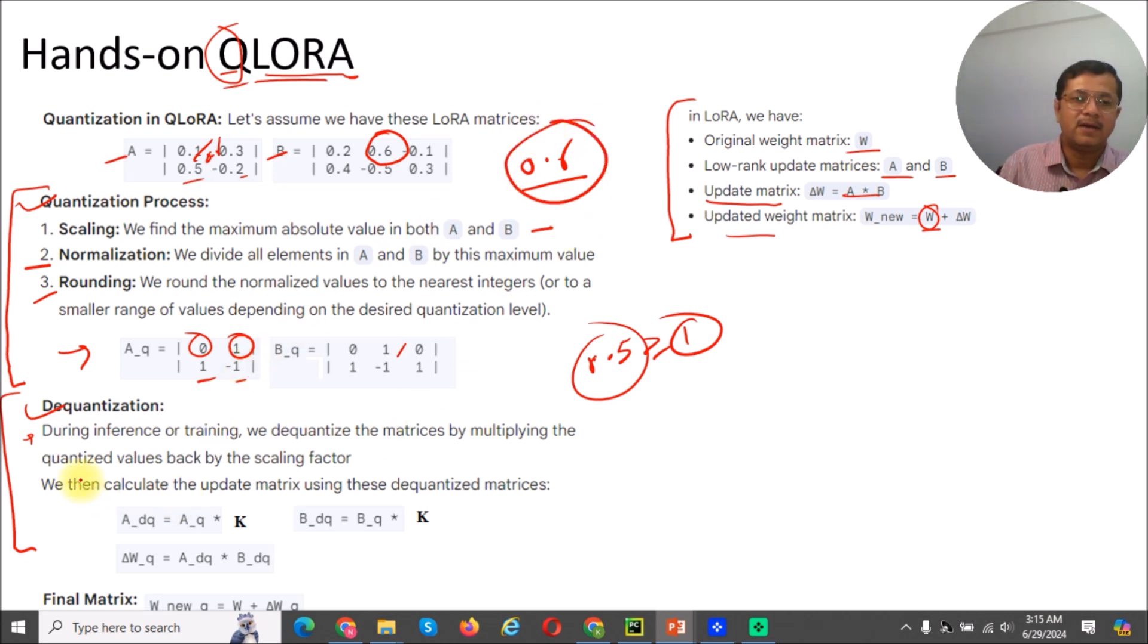For that, these are the process. During inference or training, we dequantize the matrices by multiplying the quantized value back by the scaling factor. So this is our scaling factor, K equal to 0.6. We will just multiply it with 0.6, and then we will calculate delta.